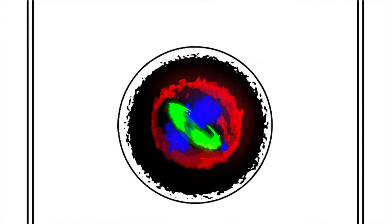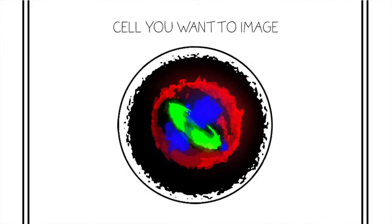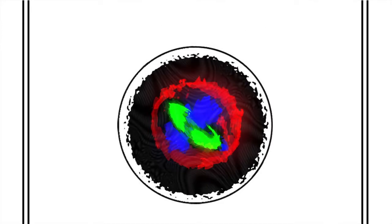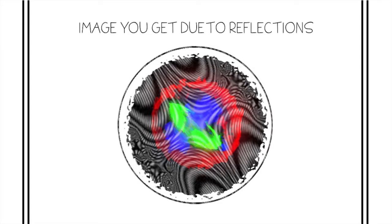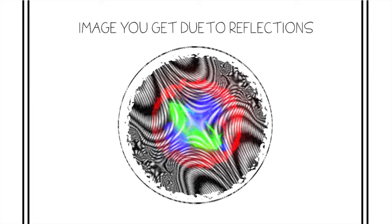When imaging challenging specimens, unwanted light due to reflection or autofluorescence can be a problem. This reflected light is detected alongside your sample's fluorescence emissions, interfering with the accuracy of your images.